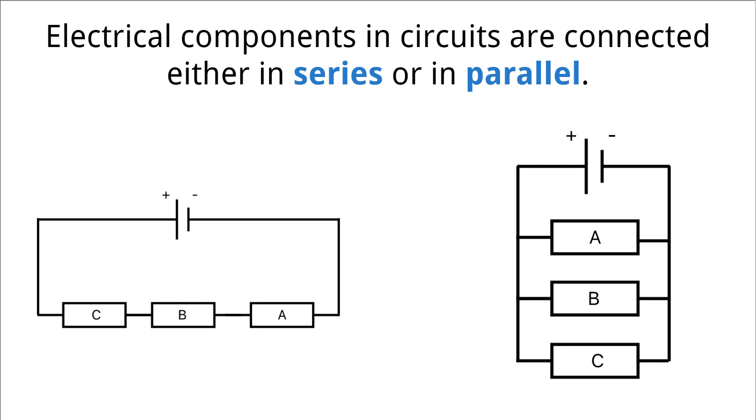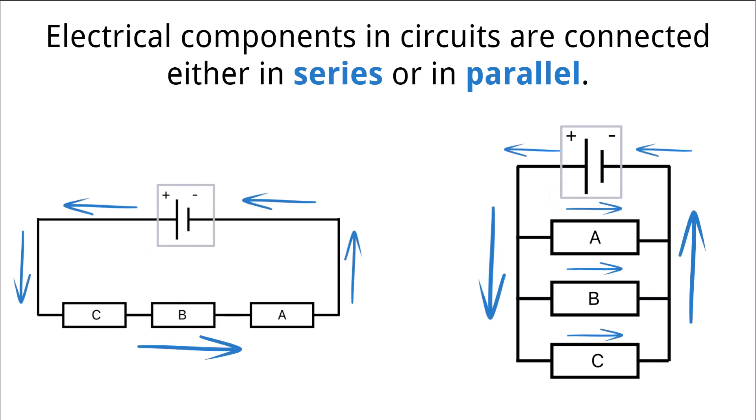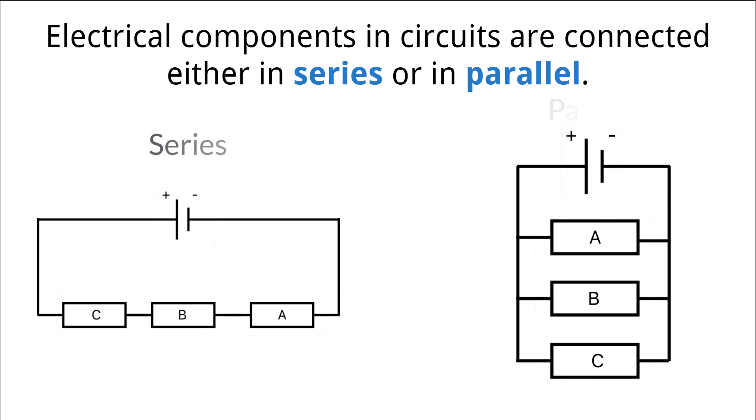Circuits are a combination of electrically conducting materials combined to complete a function. Simple circuits consist of an electric power source, wires to carry the electric charge, and a load to carry the electric charge through. There are two important ways to connect a circuit: either in series or in parallel. A series circuit is connected with components following one another, while a parallel circuit has components individually connected to the power source rather than one right after each other.